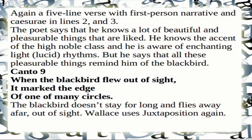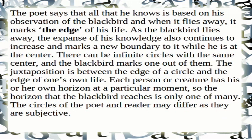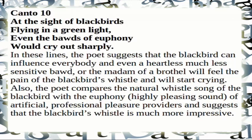Canto 9: 'When the blackbird flew out of sight, it marked the edge of one of many circles.' The blackbird flies away afar, out of sight. The poet uses juxtaposition — as the blackbird flies away, it marks the edge of his life, and his expanse of knowledge continues to increase, marking a new boundary. There can be infinite circles with the same center, and the blackbird marks one of them. The circles of the poet and reader may differ, as they are subjective.